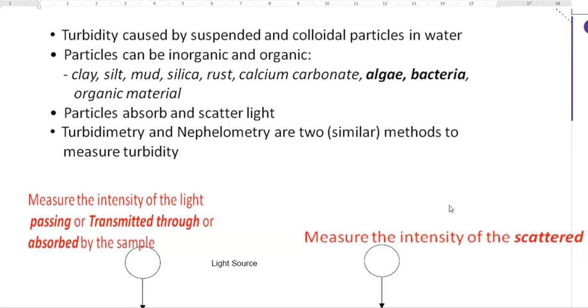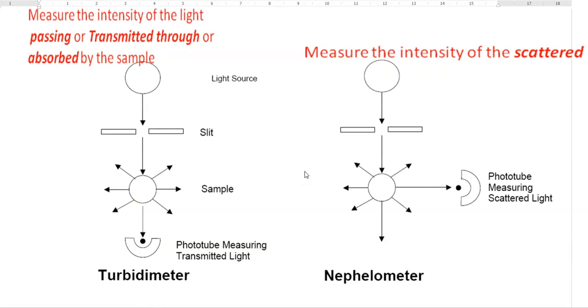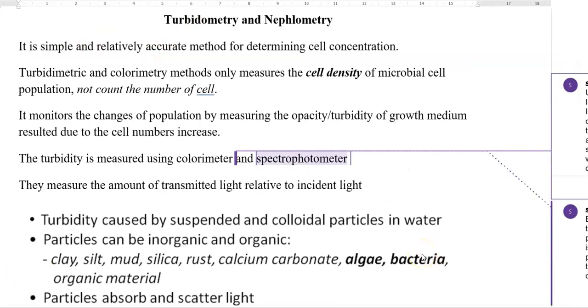Turbidometry and nephilometry are two similar methods used to measure turbidity. A turbidometer is an instrument that measures the intensity of light passing or transmitted through or absorbed by the sample. This is a line diagram showing the various parts of a turbidometer, where a light source is present, where a sample is kept, and how a phototube measures the transmitted light. The principle of turbidometry is applicable with two instruments: colorimeter and spectrophotometer, which measure the amount of transmitted light relative to incident light.